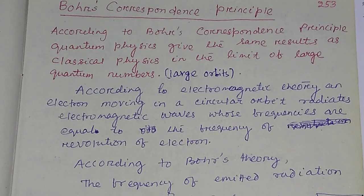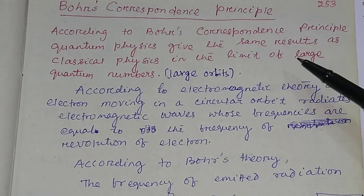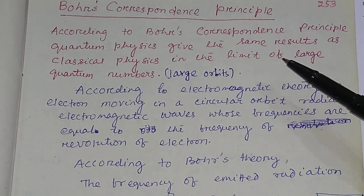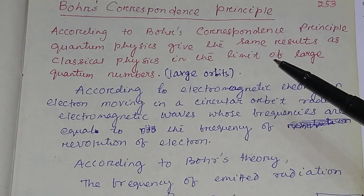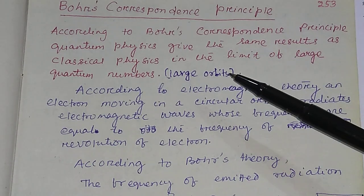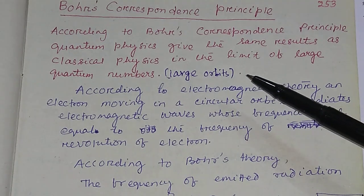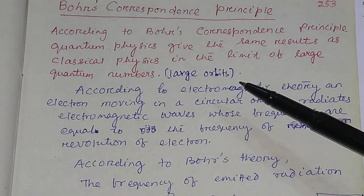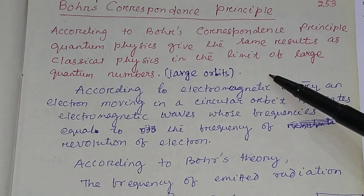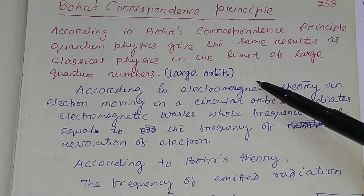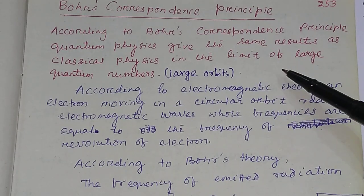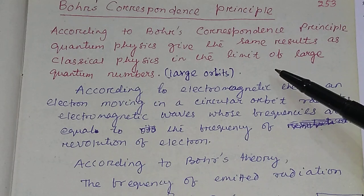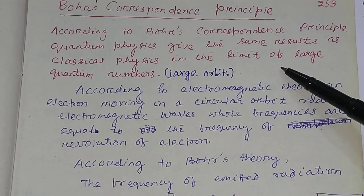Bohr's Correspondence Principle states that quantum physics gives the same result as classical physics in the limit of large quantum numbers or large orbits. That is, when the orbit is large or the quantum number is large, classical physics and quantum physics give the same result.